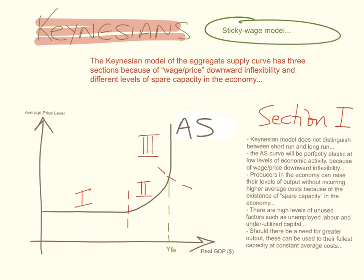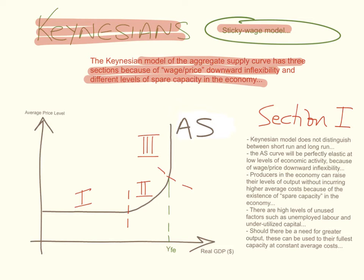Keynesians — they follow John Maynard Keynes — have proposed an alternative model, which is sometimes known as the sticky wage model. The Keynesian model of aggregate supply has three sections because they believe there is wage-price downward inflexibility and different levels of spare capacity in the economy. The Keynesian aggregate supply curve looks very different to the monetarist or new classical model. We can divide it into three sections.